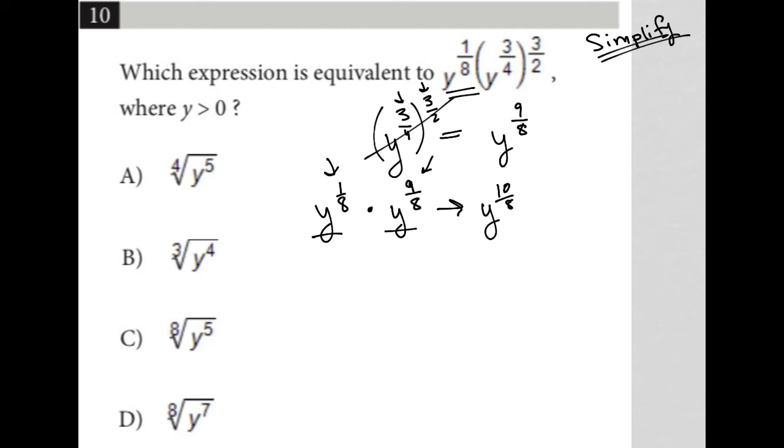But I can reduce that fraction. So instead of 10 eighths, I can rewrite that as 5 fourths, which is essentially dividing both top and bottom by 2. So I have y to the 5 fourths. Y to the 5 fourths is the most simplified version of our answer.